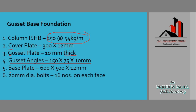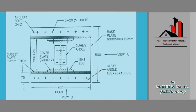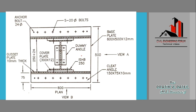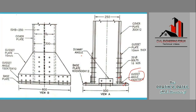Then we have the base plate with dimensions 600 x 500 mm and 12 mm thickness, and 20 mm diameter bolts are used — 16 numbers on each face. Here it is shown: 20 mm diameter bolts, 16 in number, connecting the column to the gazette plate. So friends, this is all about the gazetted base foundation, which is a type of column basis. Thank you for watching.